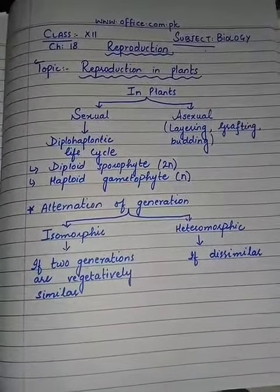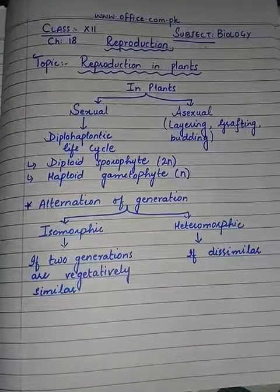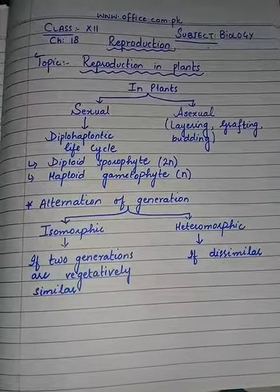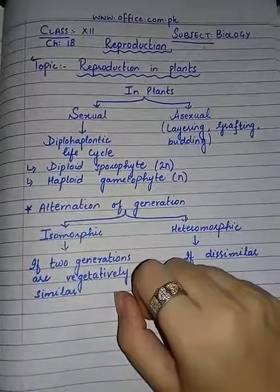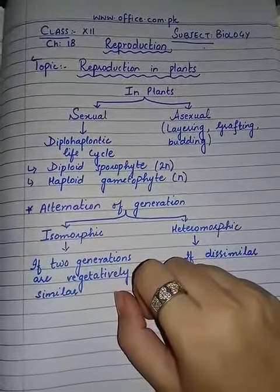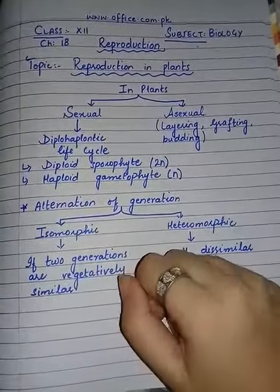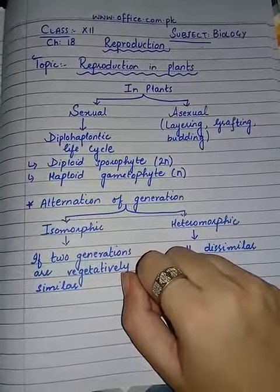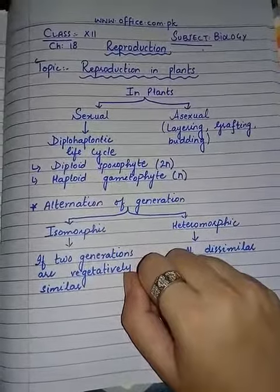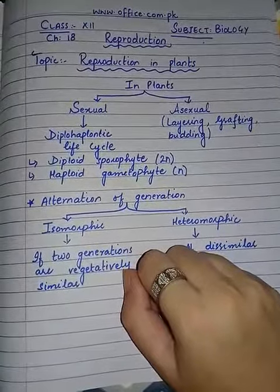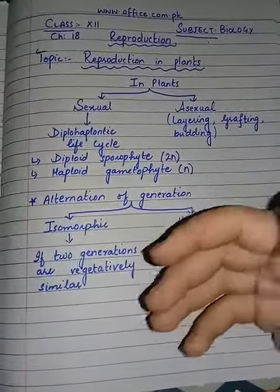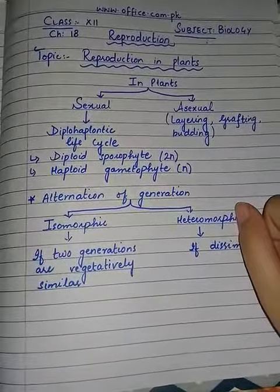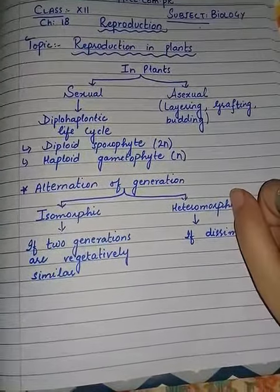Bismillahirrahmanirrahim. Dear students, Assalamualaikum and welcome to office.com.pk. Today we are going to discuss reproduction in plants. But before that, let us revise the definition of reproduction. Reproduction is the mechanism that produces new offsprings or new generations and maintains a species.